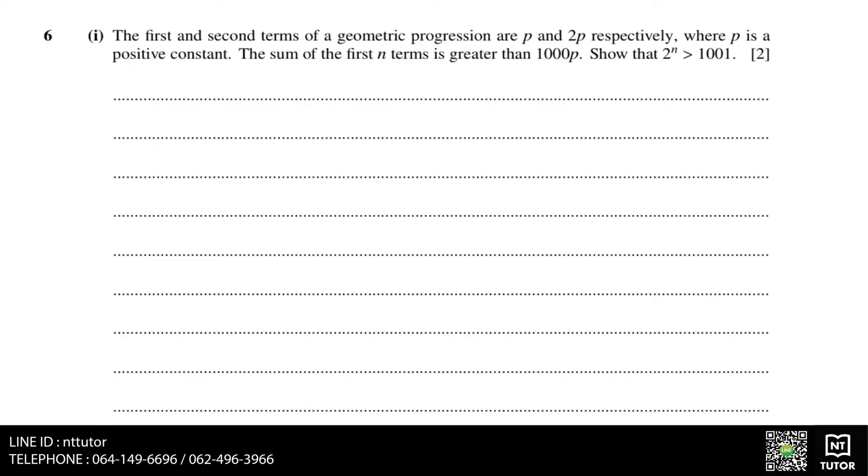The first and second terms of a geometric progression are p and 2p respectively, where p is a positive constant. The sum of the first n terms is greater than 1000p. Show that 2 to the power of n is greater than 1001.